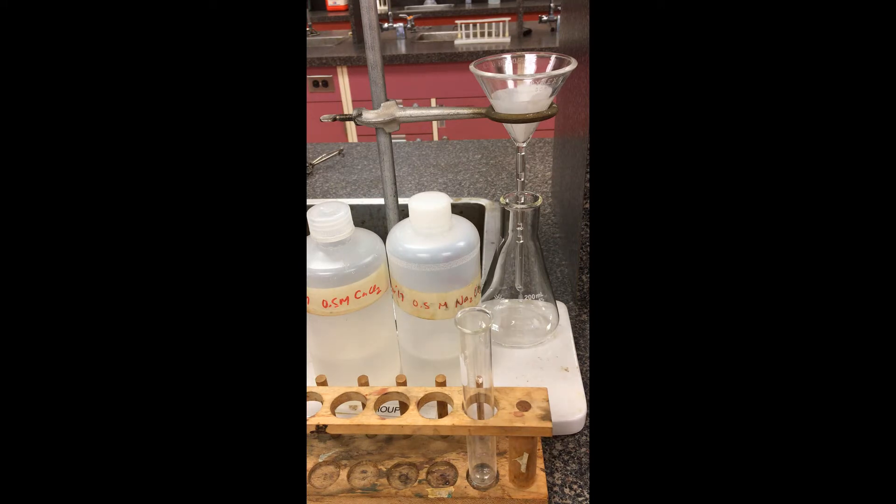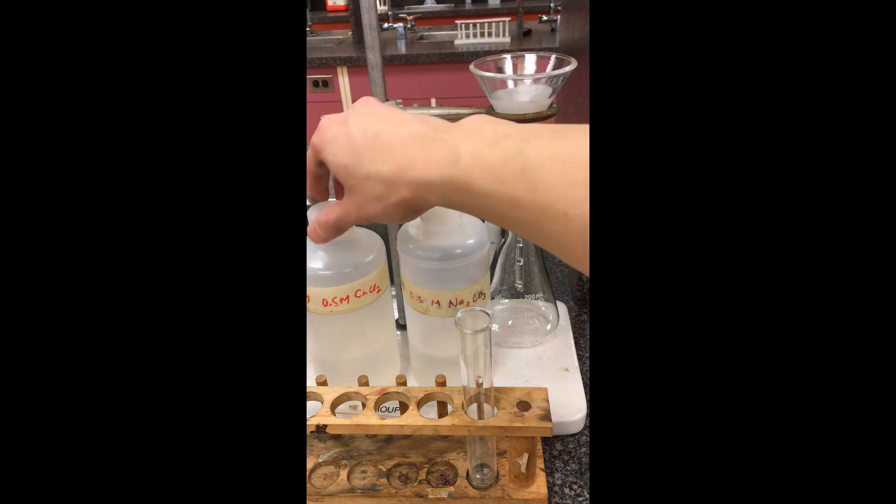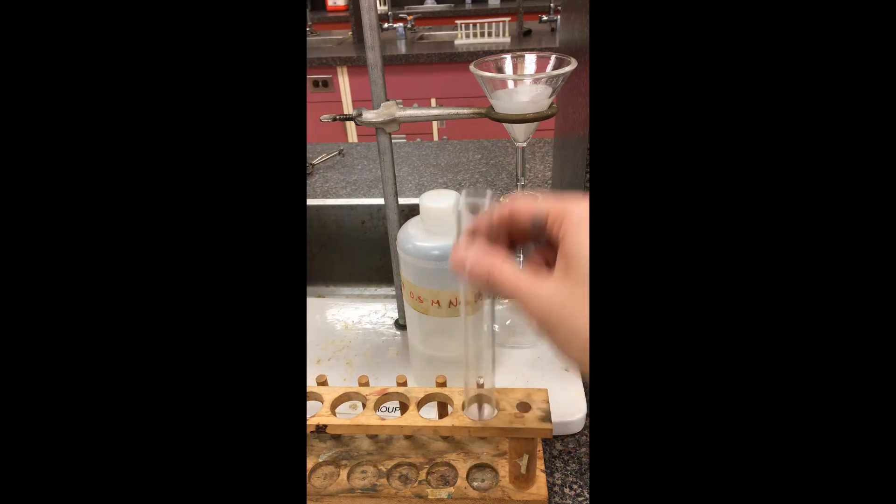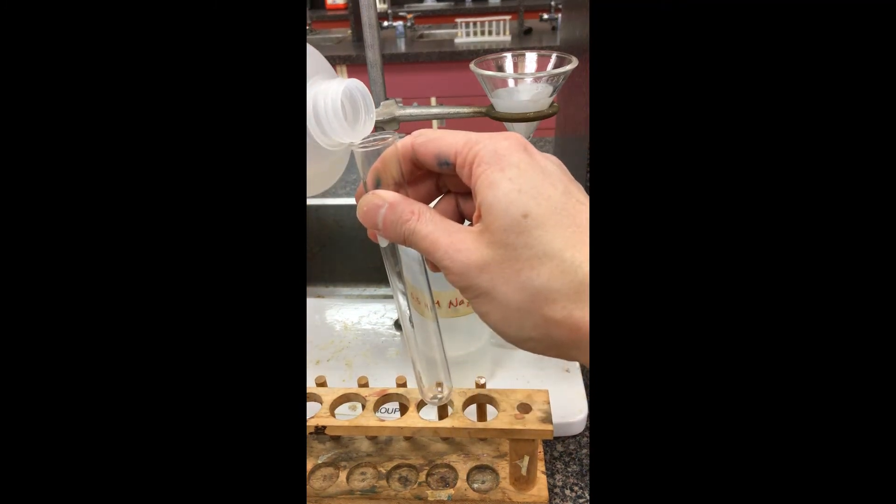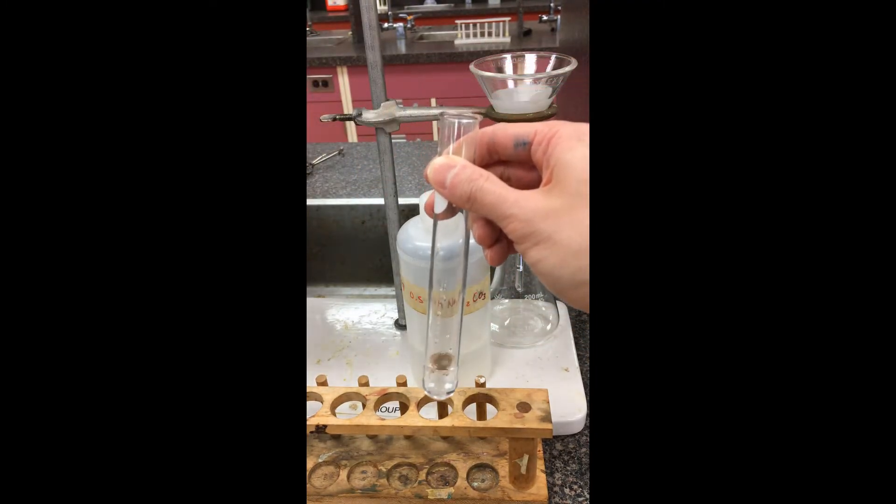So I'm just going to do a simple demonstration here between calcium chloride and sodium carbonate. It's going to be a double displacement reaction here. We're just going to pour this into this test tube. This is a double displacement that forms a precipitate, so that's the calcium chloride solution.